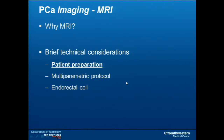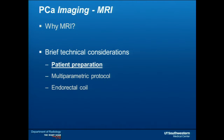A few brief technical considerations that are common questions from ordering physicians. First, patient preparation is not substantially different from any other MRI of the abdomen or pelvis. The two different things we ask patients are: one, no ejaculation for the three days preceding the MRI, to maximize the distinction of the seminal vesicles; and two, patients are recommended a fleet enema a couple of hours before the study, so that placement of the endorectal coil is not as uncomfortable.